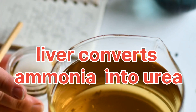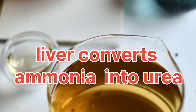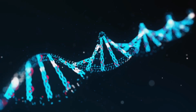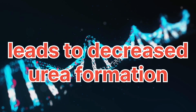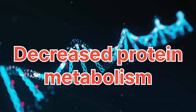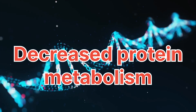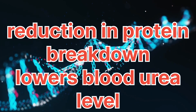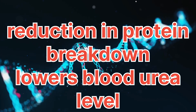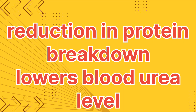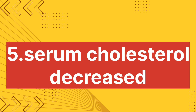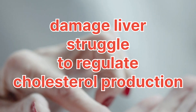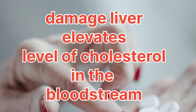Second, impaired ammonia detoxification: ammonia is a byproduct of protein metabolism, and the liver normally converts it into urea. Liver dysfunction can result in impaired ammonia detoxification, leading to decreased urea formation. Third, decreased protein metabolism: liver dysfunction may also affect the breakdown of protein. Since urea is a byproduct of protein metabolism, a reduction in protein breakdown can contribute to lower blood urea levels.